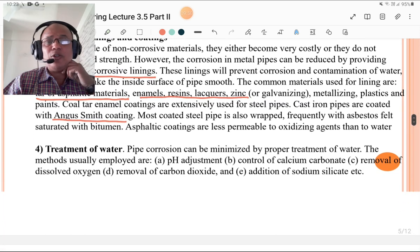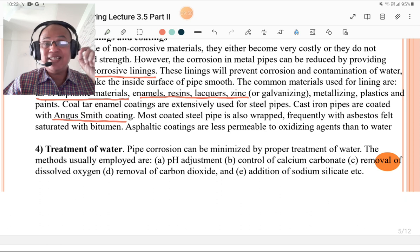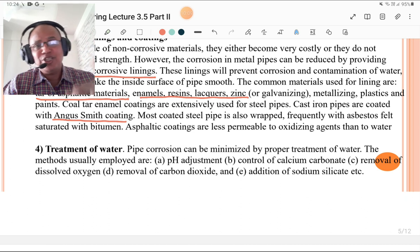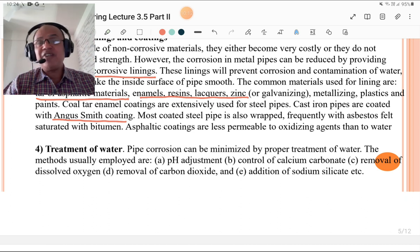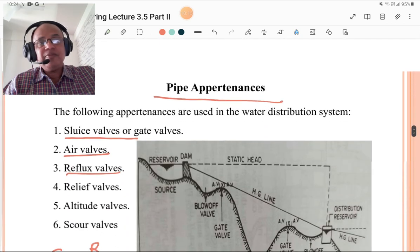Treatment of water is also one of the processes to prevent corrosion. Pipe corrosion can be minimized by proper treatment of water. The methods usually employed are pH adjustment, control of calcium carbonate, removal of dissolved oxygen (DO), removal of carbon dioxide, and addition of sodium silicate. You must know these processes of treatment to the water to avoid corrosion of pipes.